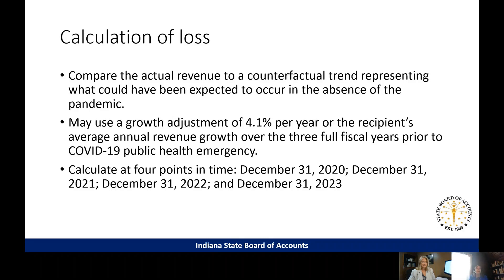You're going to perform this calculation at four points in time. The only time that's passed now is December 31st, 2020. Beginning of 2021 or 2022, you can look back at 2021, and so forth — at the end of each year through December 31st, 2023. The formula included in the interim rule allows for the 4.1 percent to grow over the number of months that have elapsed since 2019, and that's already built into the formula.